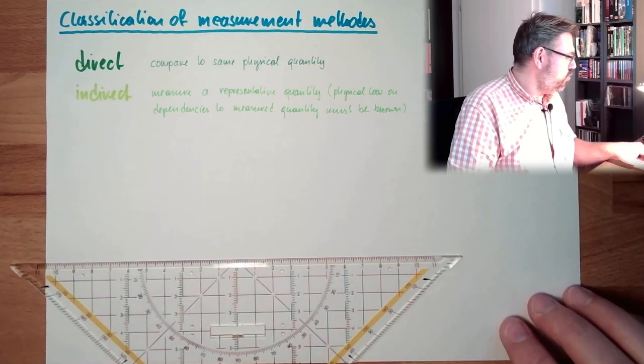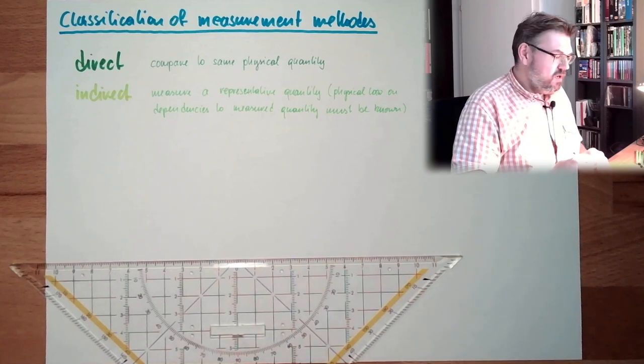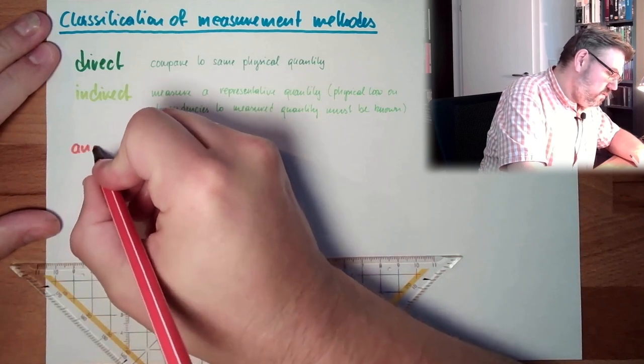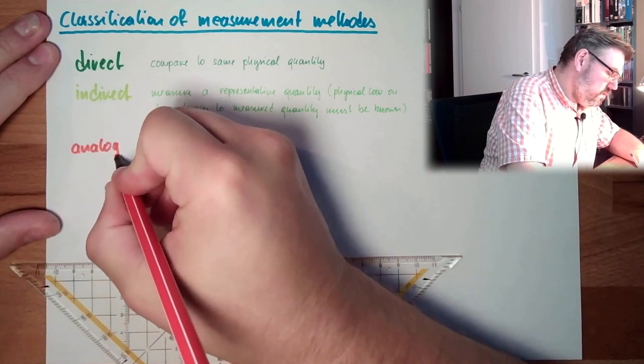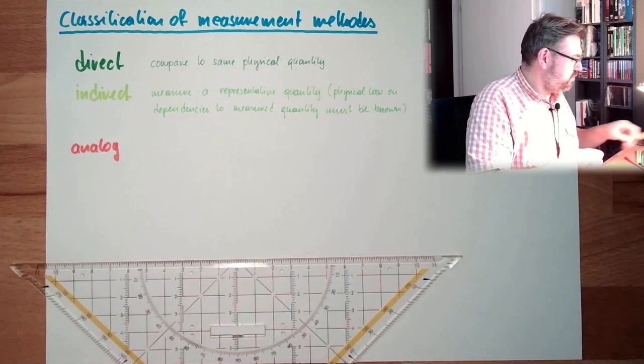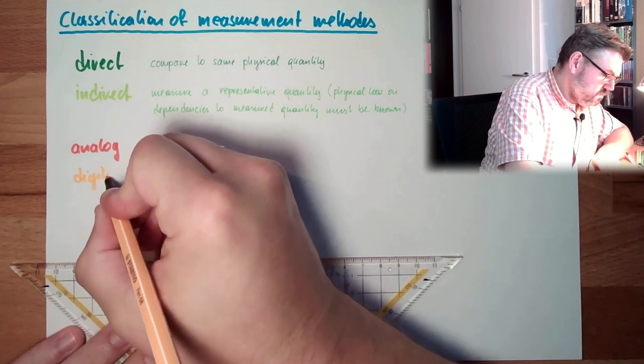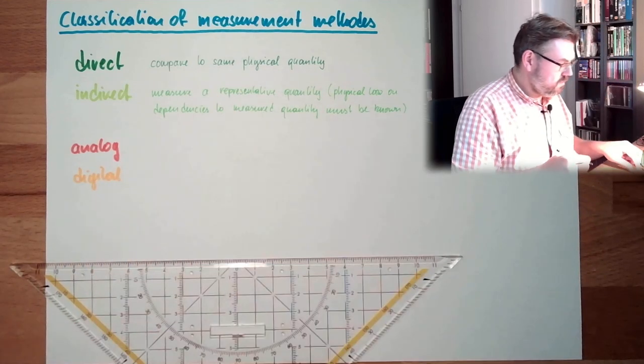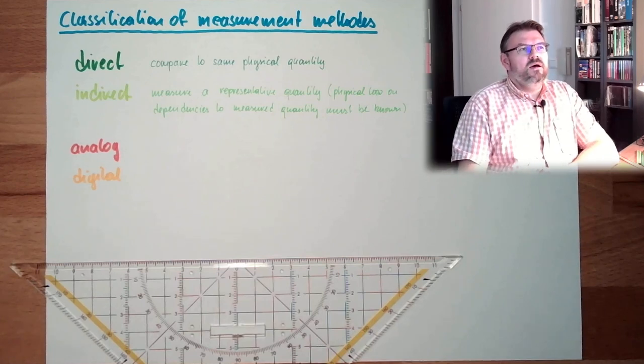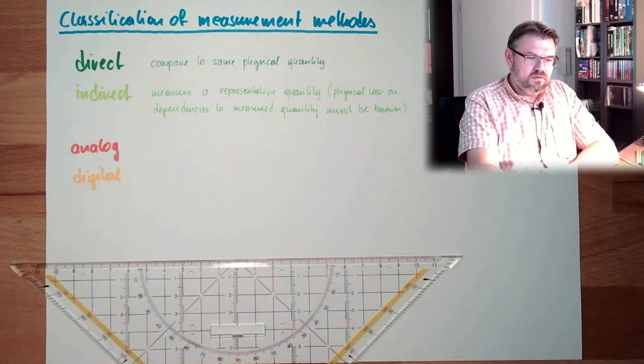What else do we have? Let's see. So, we have analog and digital. Analog measurement and digital measurement. I want to explain it with an example.